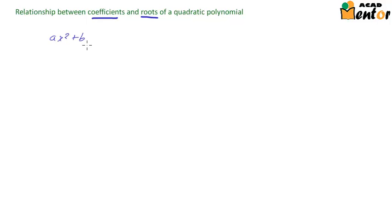Hello friends. In this video we are going to learn about the relationship between coefficients and roots of a quadratic polynomial. Let's consider the general form of a quadratic polynomial which is given by Ax² + Bx + C = 0, and suppose alpha and beta are the roots of this polynomial.